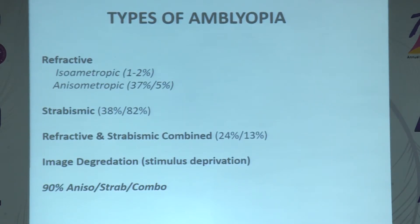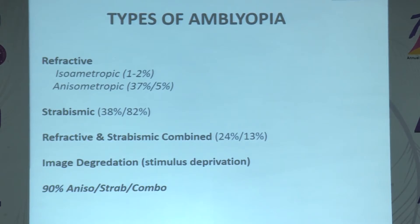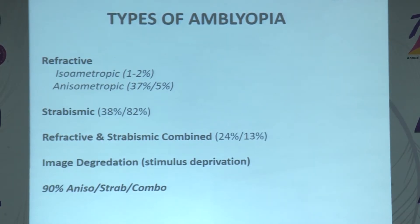Broadly, amblyopia can be divided into types based on the underlying mechanism: refractive amblyopia, which can be either isometropic, anisometropic, or meridional; strabismic amblyopia; combined refractive and strabismic; and image degradation or stimulus deprivation amblyopia. Ninety percent of cases are due to anisometropia, strabismus, or a combination of these.